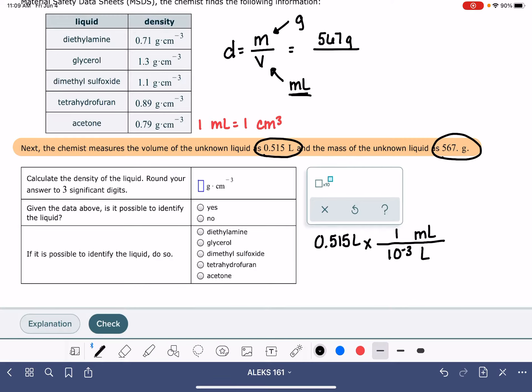Milli is the prefix for 10 to the minus three. So 0.515 divided by 10 to the minus three gives us 515 milliliters. We'll plug that in up here, 515 milliliters, and we'll do the math on this.